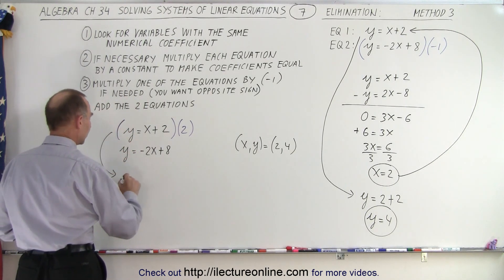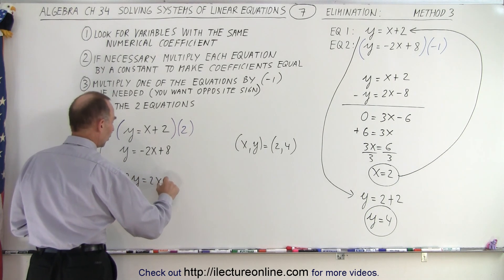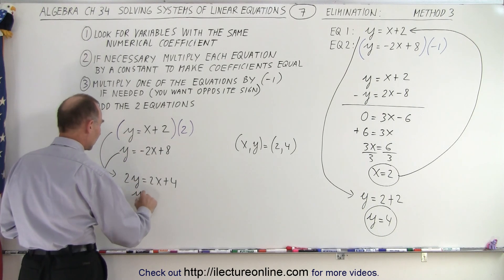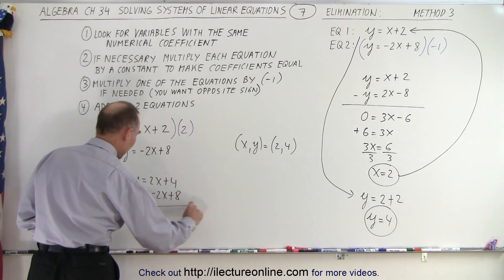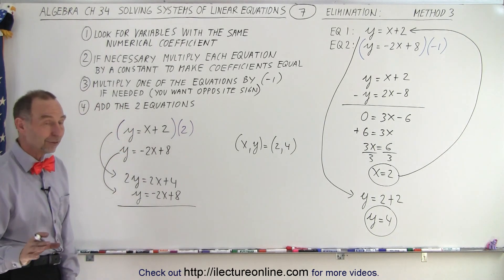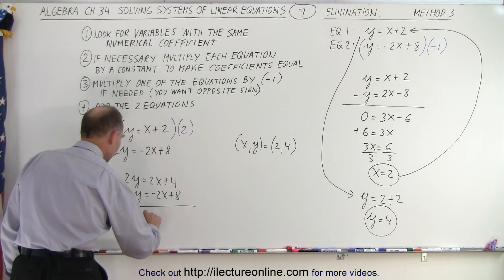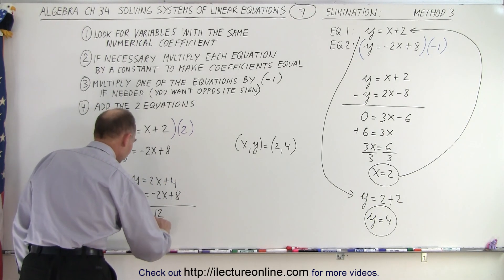So our first equation will be rewritten as 2y equals 2x plus 4. Now we write the second equation as y is equal to minus 2x plus 8. And now when I add those two together, see what happens. The x is eliminated. So we get 3y is equal to 12. Divide both sides by 3. That gives us y is equal to 4.